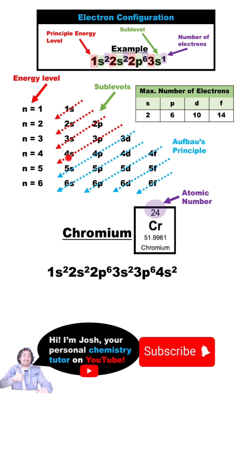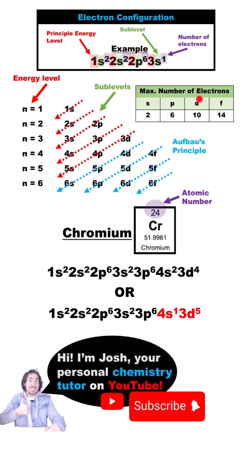Now we'll go up to the 4s and put 2 electrons there, and then finally we'll need to move up to the 3d, which can hold 10 electrons so we can put the last 4 electrons in that sublevel.